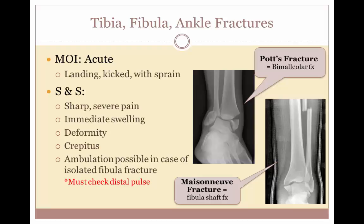Common signs and symptoms will include sharp, severe pain, immediate swelling, deformity, and crepitus. Ambulation may be possible in cases of isolated fibular fracture. Since the fibula does not bear a whole lot of weight, a fibular fracture will allow the patient to still walk around or ambulate. We must check the distal pulse to make sure that blood flow is still reaching distal structures.